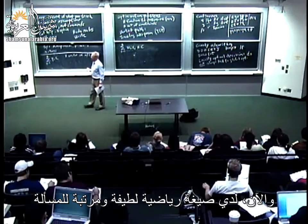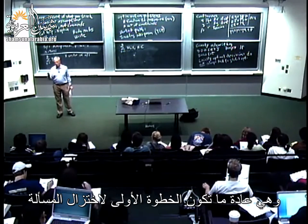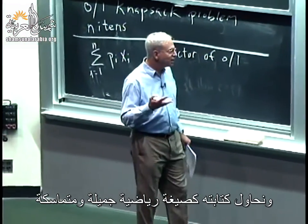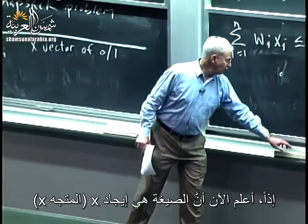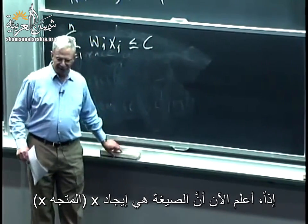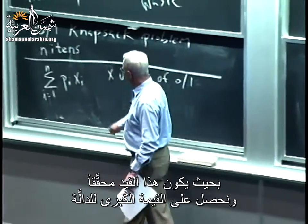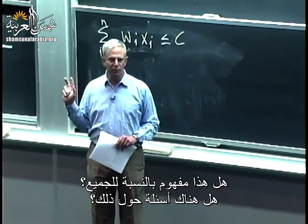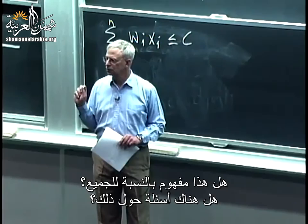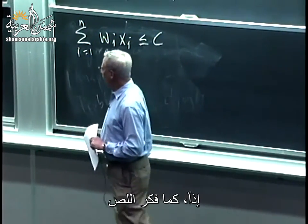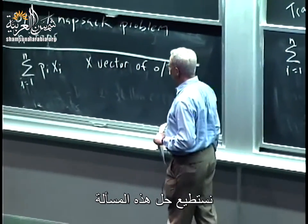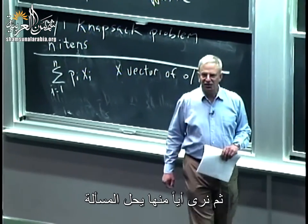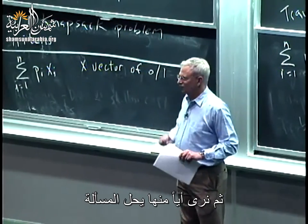So I have a nice, tidy mathematical formulation of the problem. That's often the first step in problem reduction — going from a problem that has a bunch of words and writing it as a tight mathematical formulation. Now I know: find the vector X such that the weight constraint is obeyed and the value function is maximized. We can clearly solve this problem by generating all possible values of X and seeing which one maximizes the function. But how many possible values of X are there?